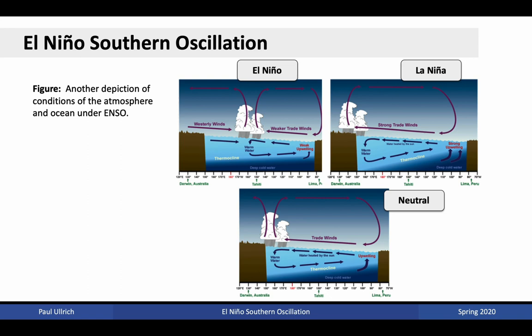Here's another depiction of the conditions of the atmosphere and ocean under ENSO, emphasizing some of the key characteristics. Under El Niño conditions, convection is dominant in the central Pacific. Warm water concentrates in the central Pacific and tends to sink here as well, driving weaker upwelling in the eastern Pacific. Under La Niña conditions, we have strong trade winds that reach across the extent of the equatorial Pacific, driving higher sea surface temperatures and warmer waters in the west, as well as convection in the west. Neutral conditions appear more similar to La Niña conditions in terms of the location of convection, however they're associated with weaker trade winds, weaker easterly wind stress, and thus a weaker circulation in both the atmosphere and the ocean.